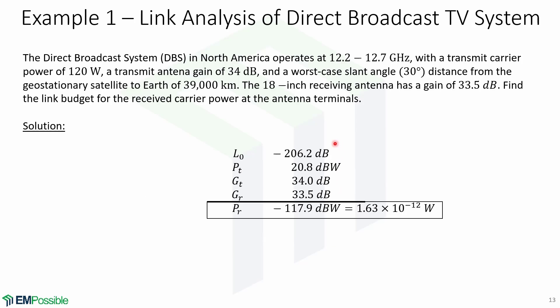Now we can group all the terms together in the link budget and then add them up, and we will get that the received power PR equals -117.9 dBW, which is equal to 1.63 × 10^(-12) watts.